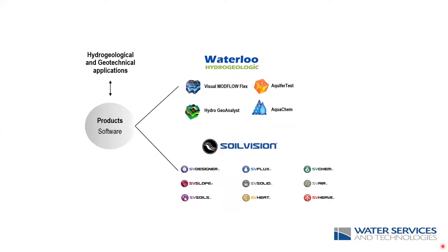In our products, which is our technology part, we represent two lines of software. One is hydrogeological application software developed by Waterloo Hydrogeologic, where we have modeling software — Visual MODFLOW Flex — and AquiferTest, which is used for interpreting pumping tests, slug tests, and aquifer tests in general. We also work with HydroGeo Analyst, which is a database, and AquaChem, which is used for interpreting chemistry data.